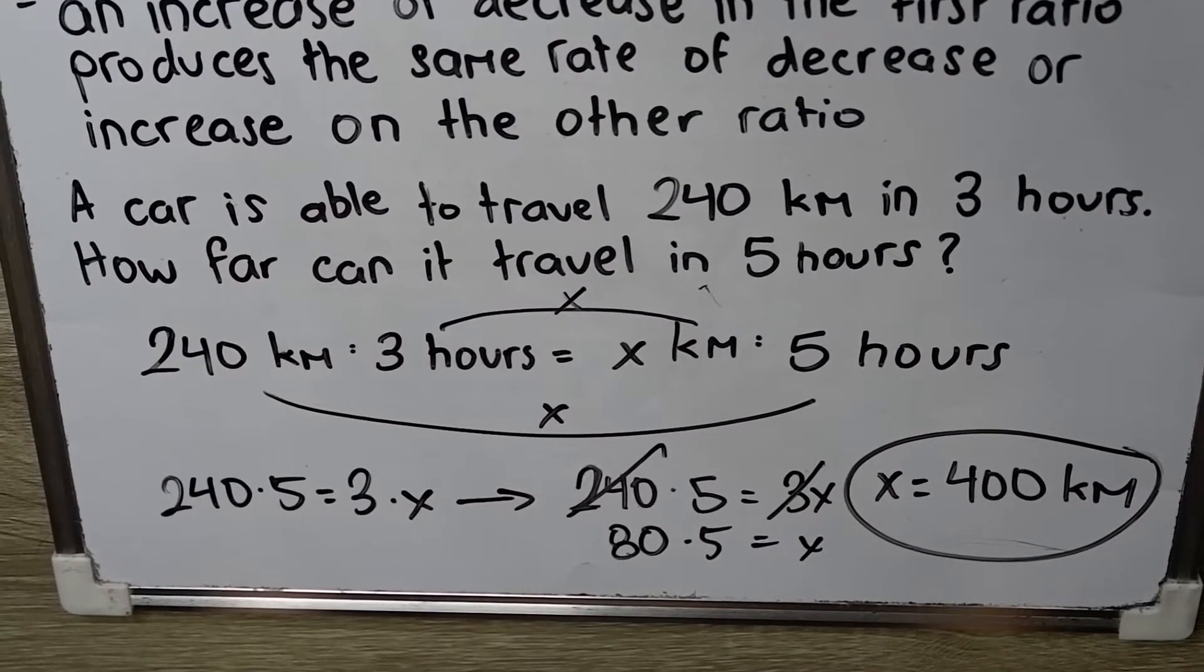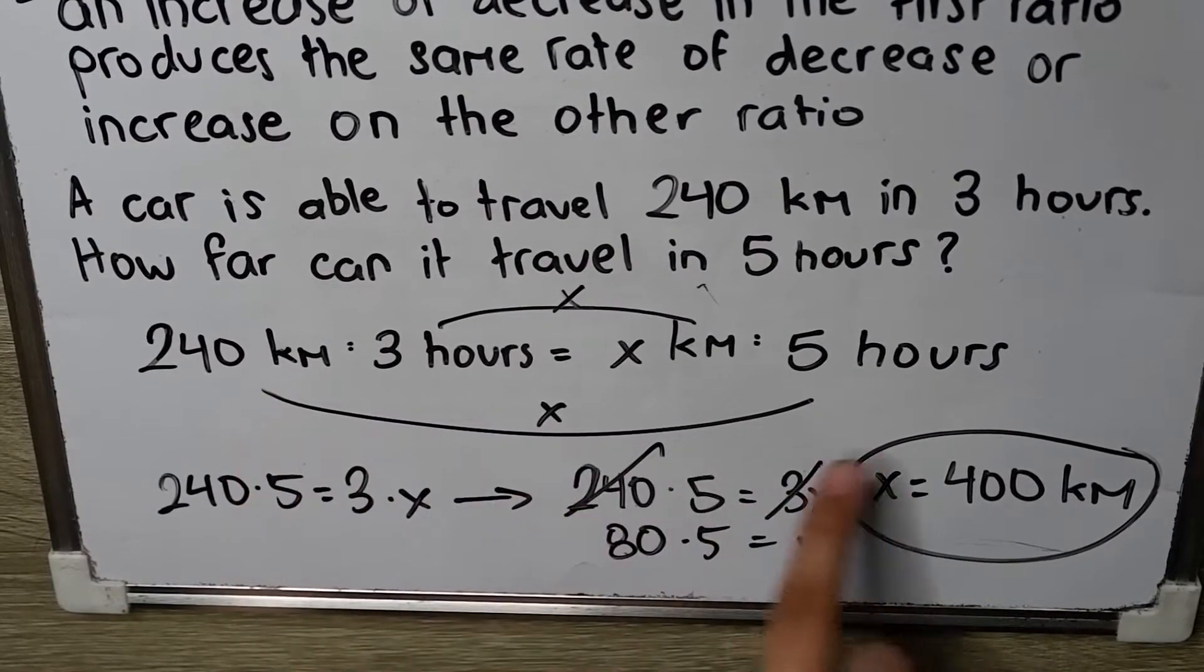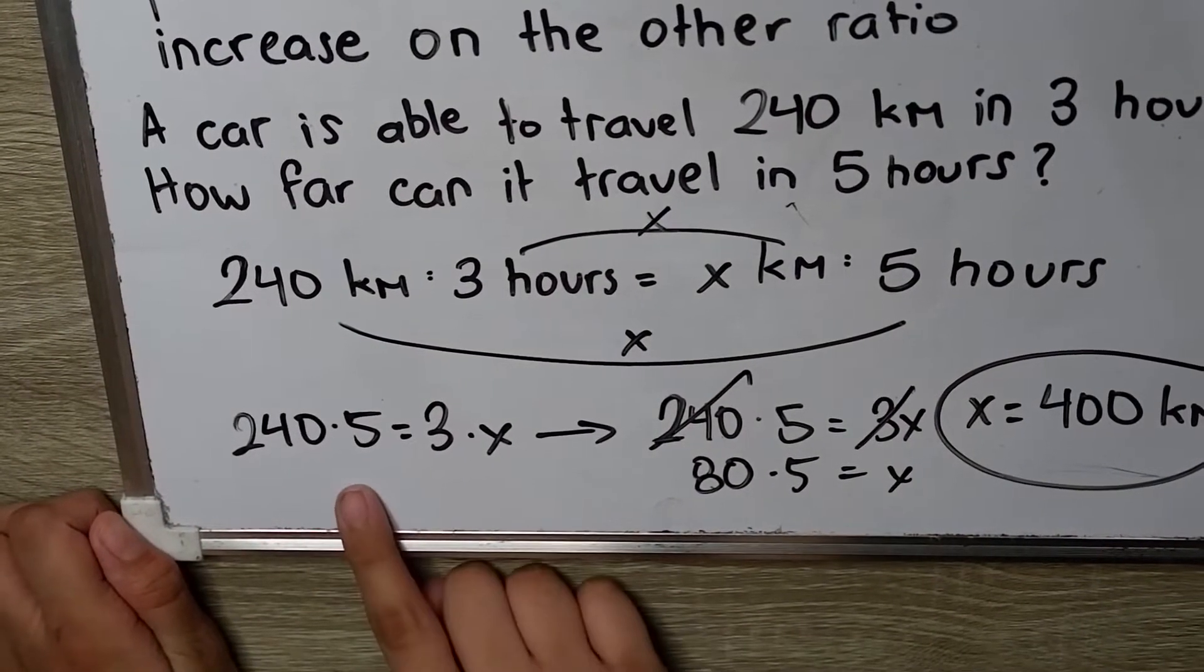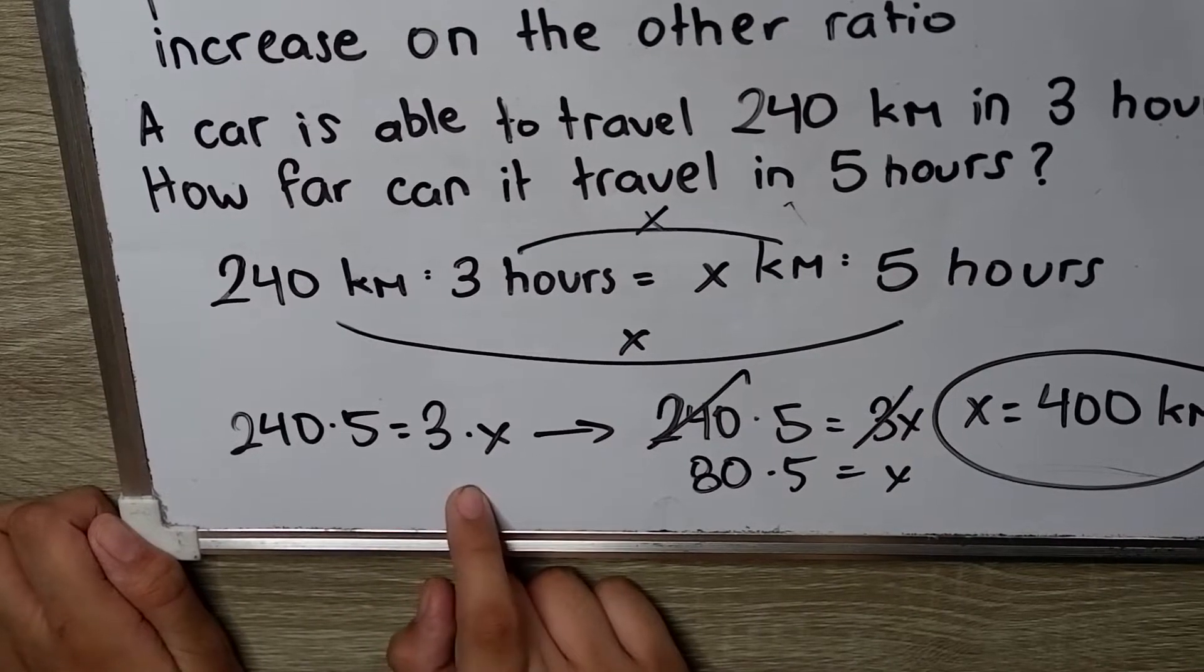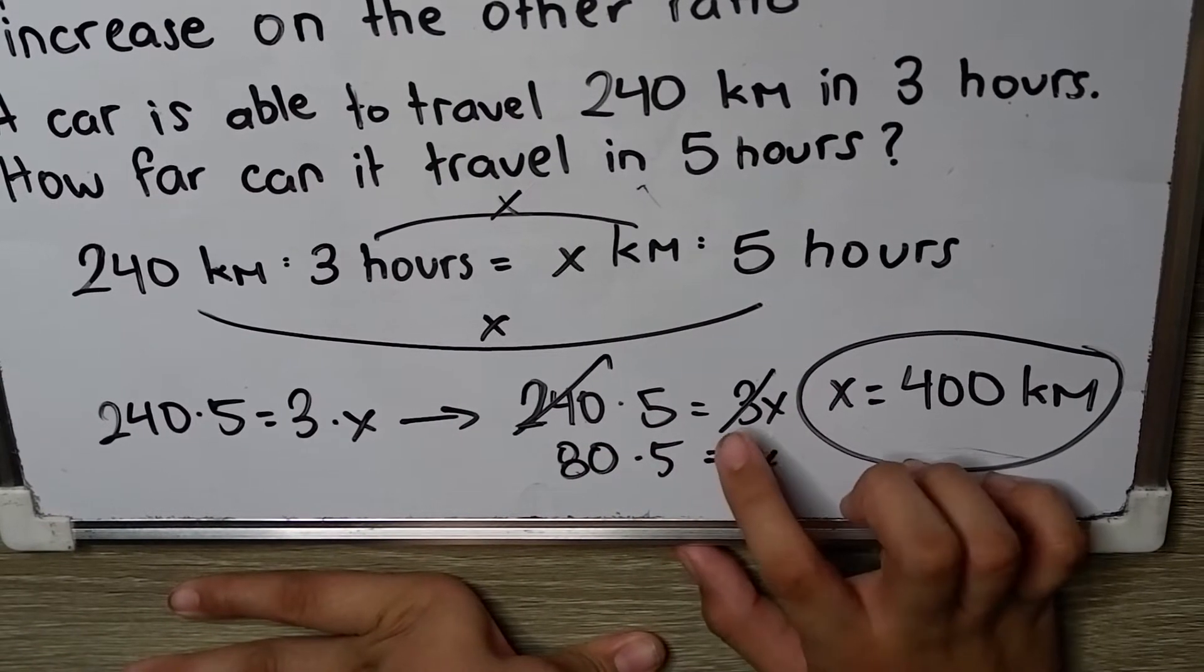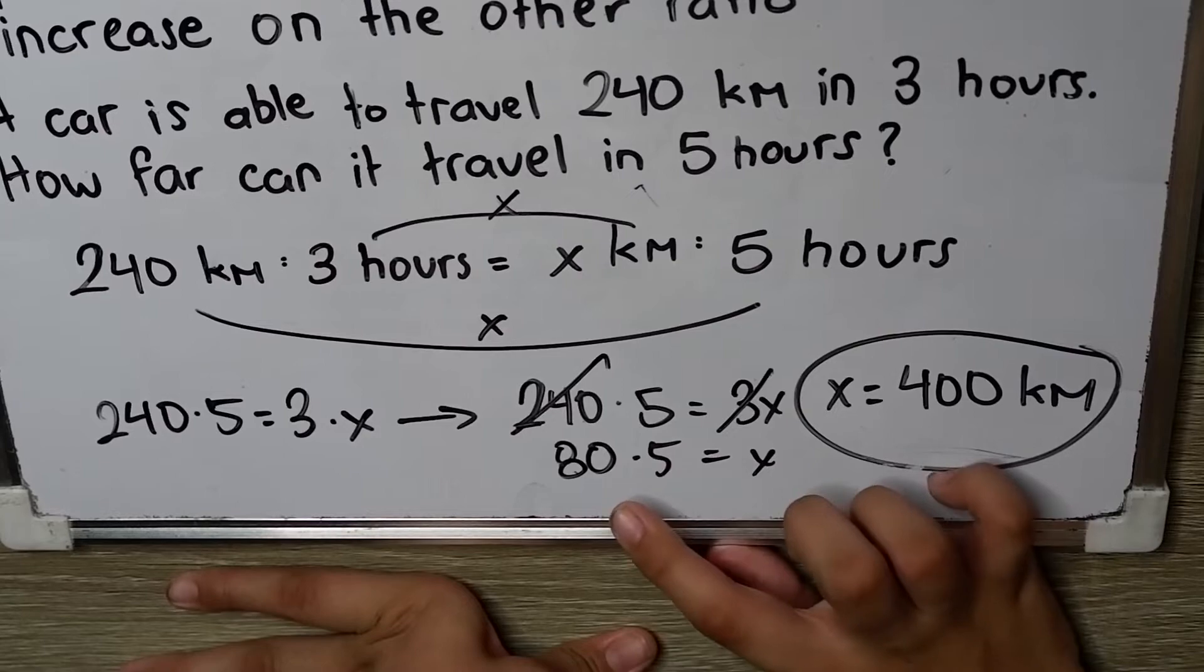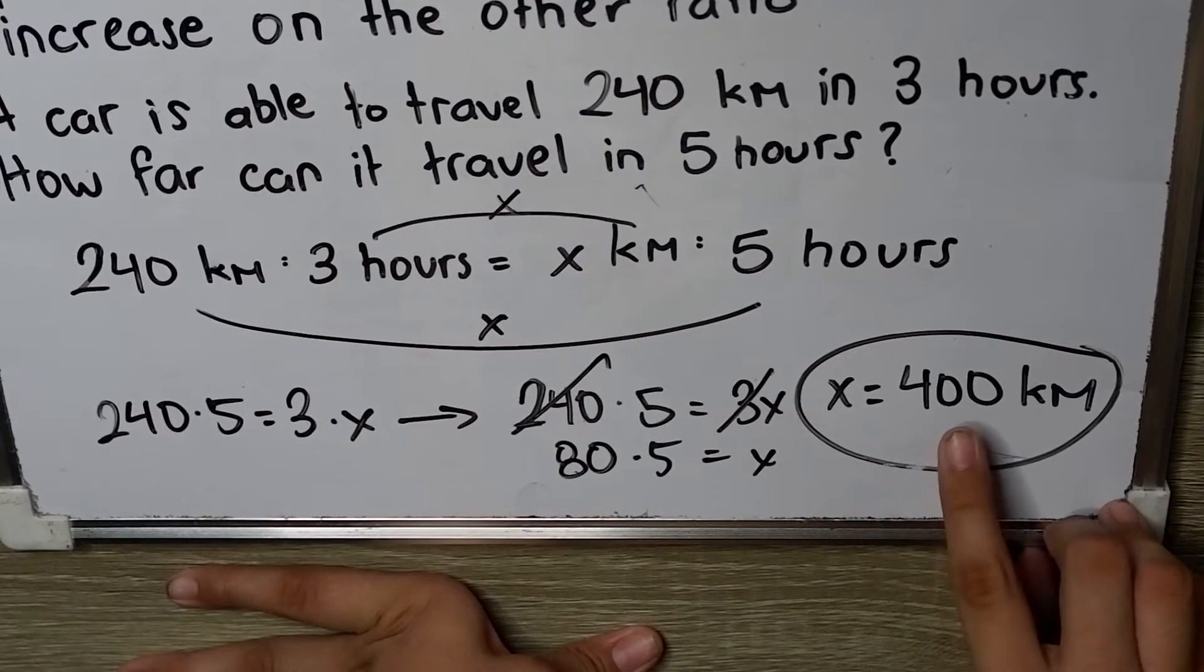How do you solve this? You solve it by cross multiplication, or by multiplying the extremes and the means. By multiplying it, we have 240 kilometers times five hours equals three times x. This becomes 240 times five equals three x. So, we cancel three and 240. We get 80 times five equals x. So, x is 400 kilometers.